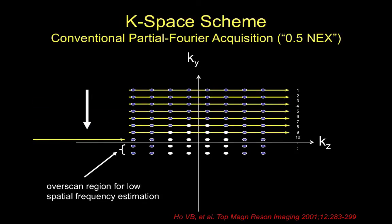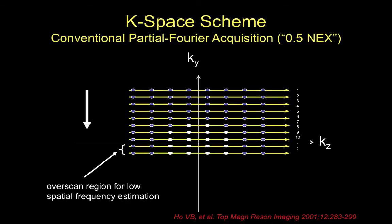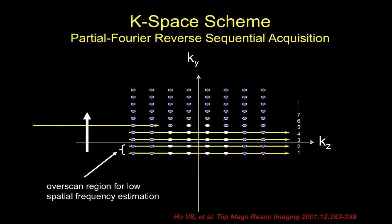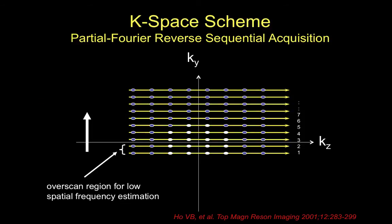Partial Fourier imaging starts at the outer lines of K-space and ends at the center, providing a speedy MRA acquisition, with the main pitfall being reduced signal-to-noise ratio — though gadolinium provides sufficient signal to overcome this. Reverse partial Fourier starts at the center of K-space and moves outward, allowing better coordination with the bolus arrival and a faster overall acquisition.